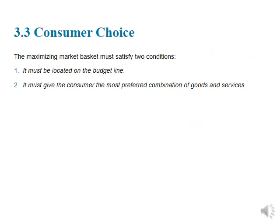Now that we've explored these two components of consumer theory — our preferences and our budget — we can start to explore the choices we'll make conditional on these two items. To do so, we're going to make explicit two assumptions that we've been hinting at. Our utility-maximizing choice is going to satisfy two conditions: one, it must be on the budget line; and two, it must be our most preferred combination. Remember, utility is just a mathematical representation of our preferences, and we're trying to find the utility-maximizing choice.